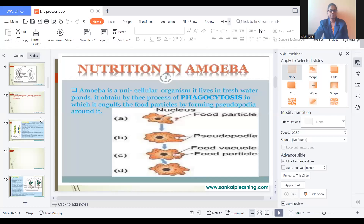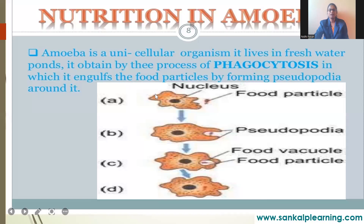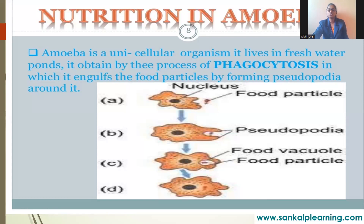First we are going to discuss nutrition in unicellular organisms, then nutrition in human beings. For simple organisms, we are going to consider amoeba. Amoeba is a unicellular organism — it is microscopic and cannot be seen with the naked eye. It is a freshwater organism, so you can find these organisms in fresh water bodies.